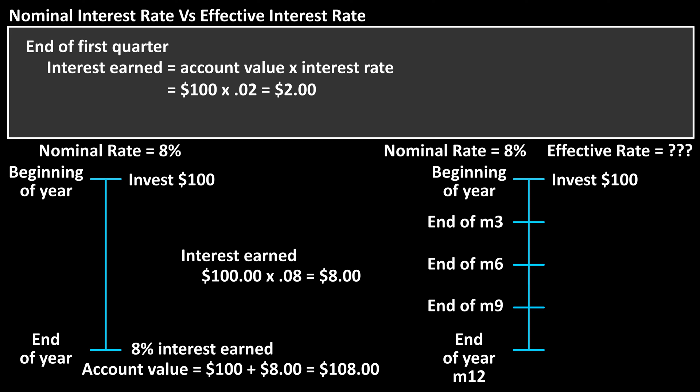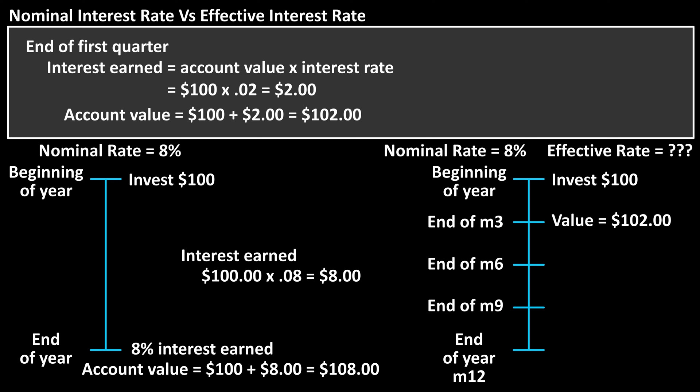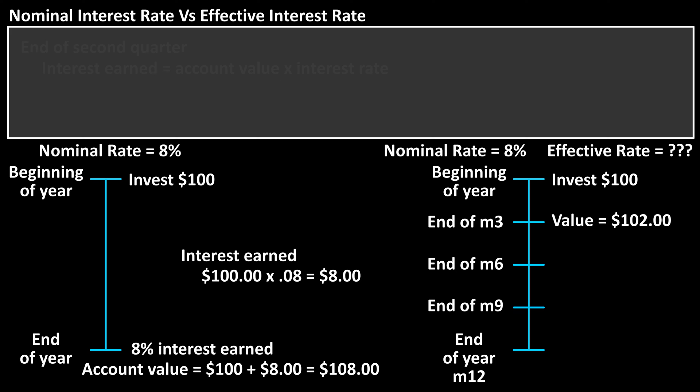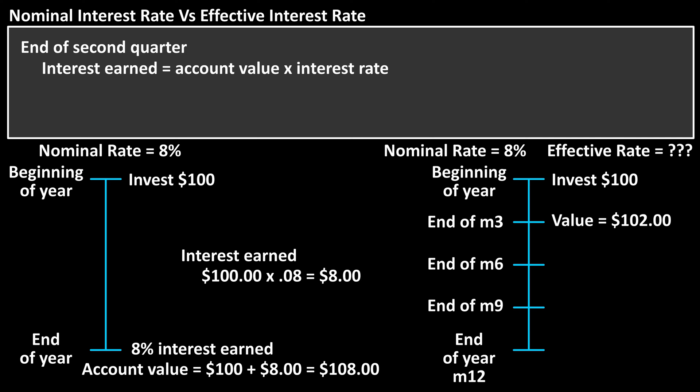So after the first quarter, the account has the $100 original investment plus the $2 of interest earned, and the total in the account is now $102. Now at the end of the second quarter, after month 6, at the end of June, the interest earned will now be the $102 in the account times, again, 2% or 0.02.